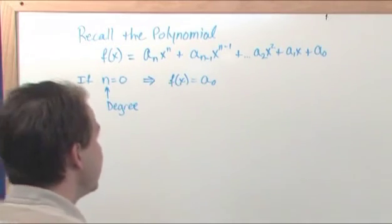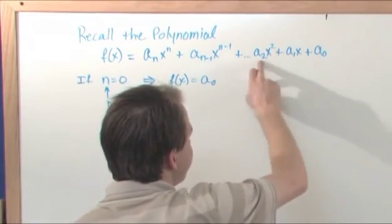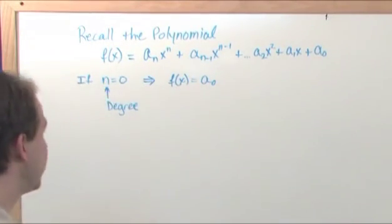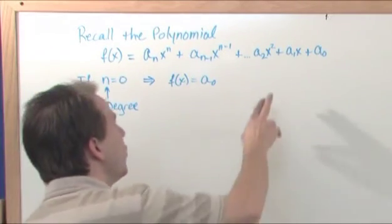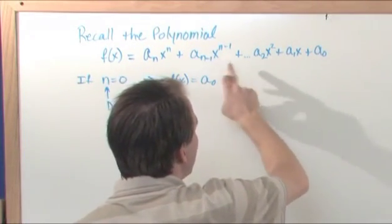So like I said before, if the degree is two, then you have your standard looking polynomial you've seen all the time. But if your degree is zero, what it means is x to the zero is the highest power in the whole thing.